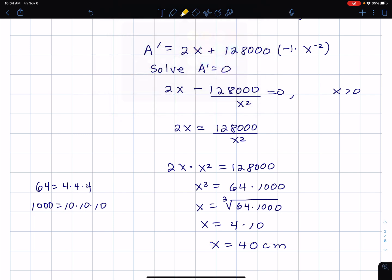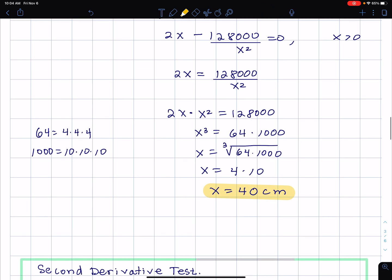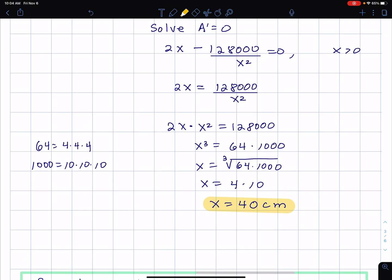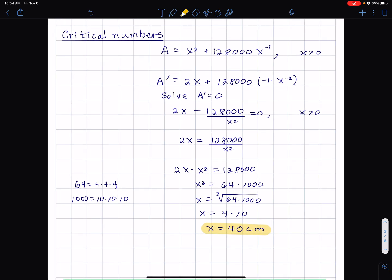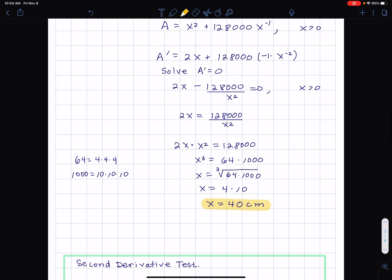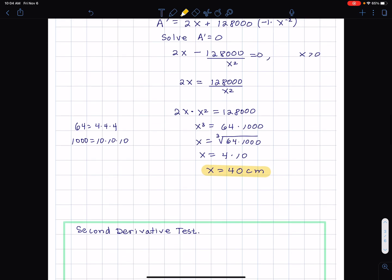Before I do that though, let's talk about something I would say is a little bit optional. What I'm going to do is take the second derivative. The second derivative is going to tell me whether this function actually is concave up or concave down when x equals 40 centimeters.